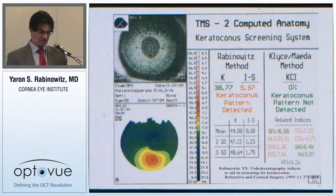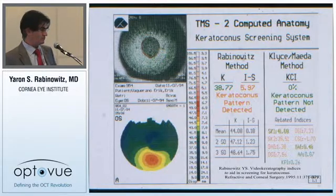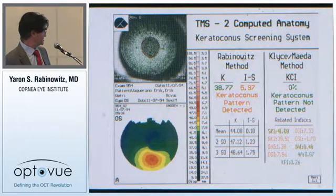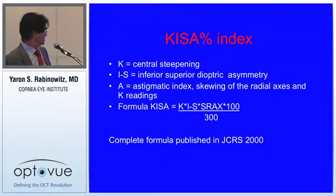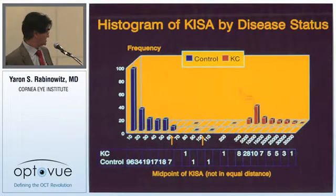Because doctors had difficulty interpreting maps, we developed indices, including the IS value, commonly used for assessing whether videokeratography maps are abnormal. We then developed the SRAX index, which quantifies the amount of skewing above and below the horizontal meridian. Combining all these into the KISA percentage index, published in the Journal of Cataract and Refractive Surgery: any value greater than 100 indicated keratoconus, less than 60 was normal, and 60–100 was suspect.